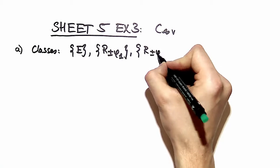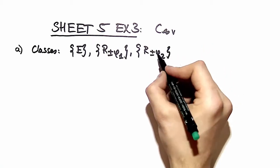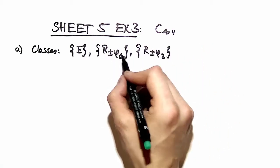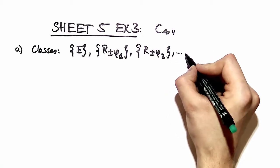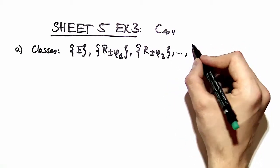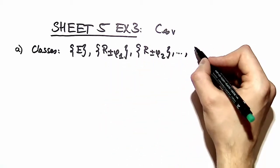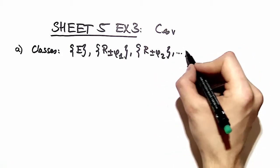If you number the angles of rotation with 1 to infinity - you can do that because it's countable - you can arrive at this notation for the conjugacy classes. You have an infinite number of them.